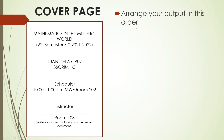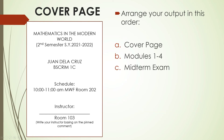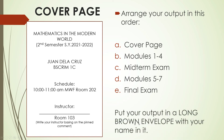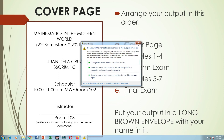Arrange your output in this order: cover page first, then your answer sheets for Modules 1 to 4, followed by your midterm exam, then Modules 5 to 7, and finally your final exam. Put your output in a long brown envelope with your name on it. Aside from writing your name on the cover page, write your name on the brown envelope as well to avoid losing your paper.